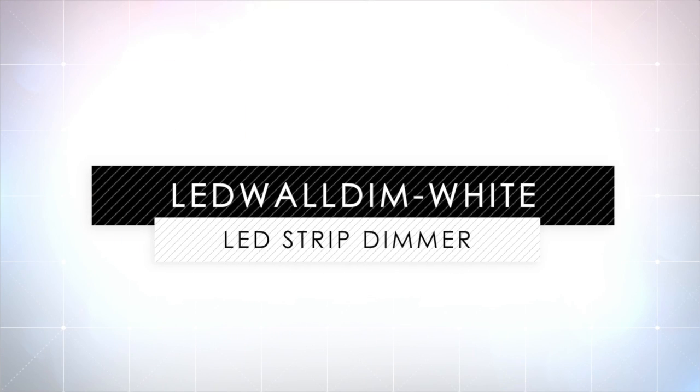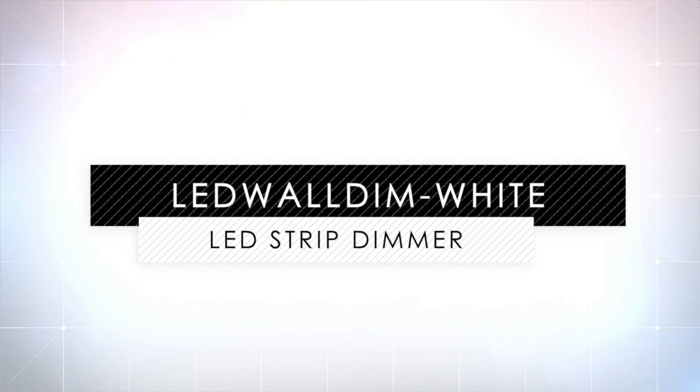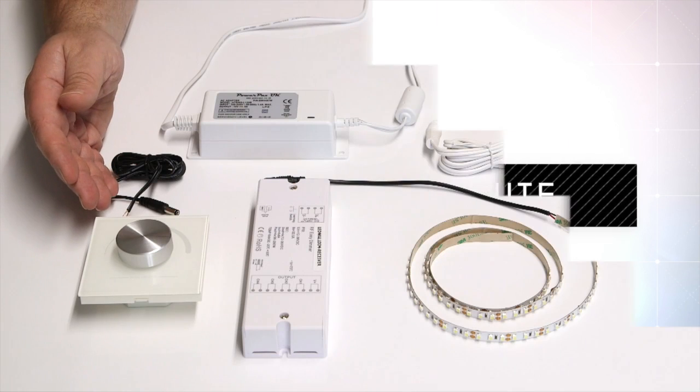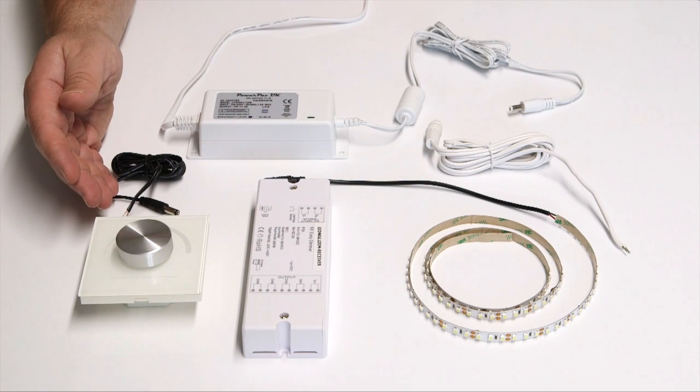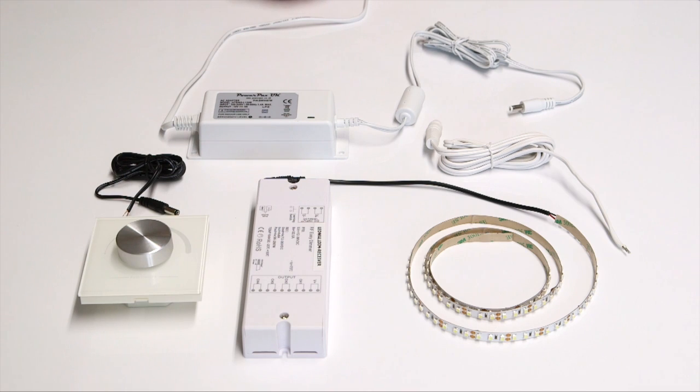Now, we will show you how to use our LED wall dim white. This unit is a wireless wall mounted LED strip dimmer and is the final example of controlling single color LED strip that we will look at in this video.